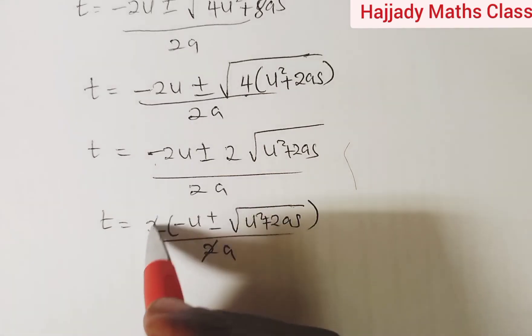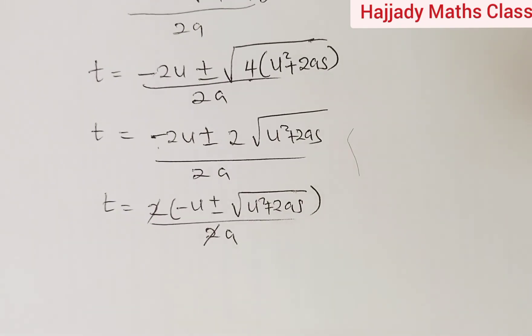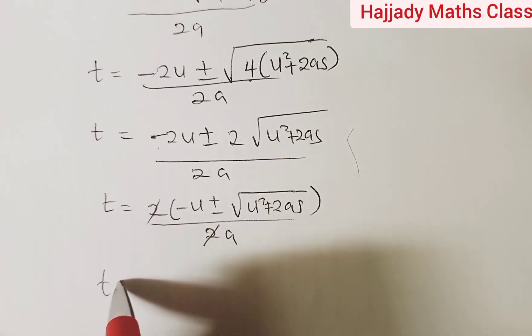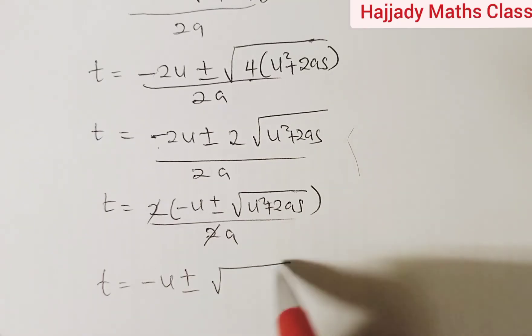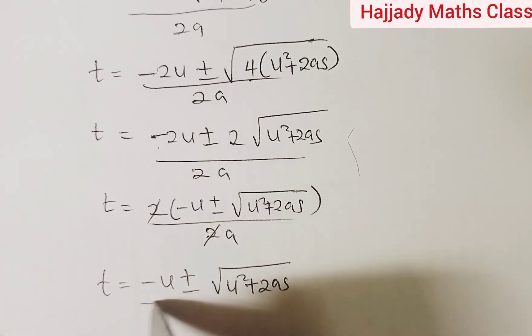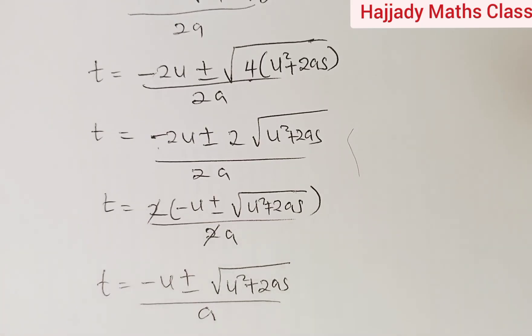And finally, we can say that t equals minus u plus or minus root of u squared plus 2as, all over a.